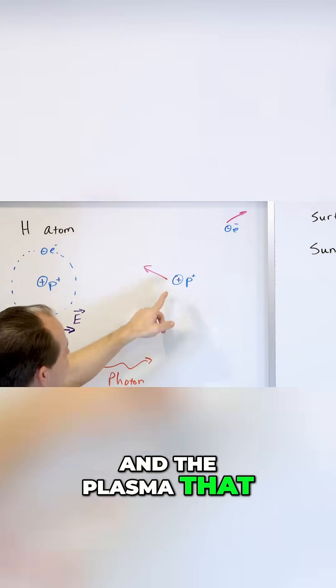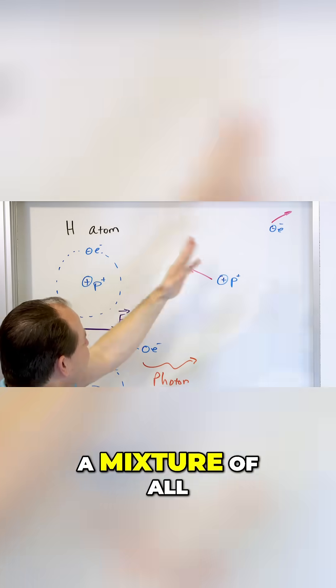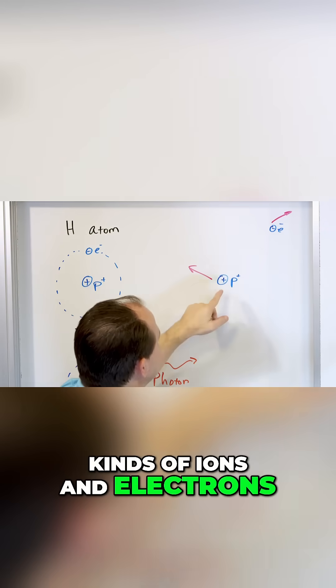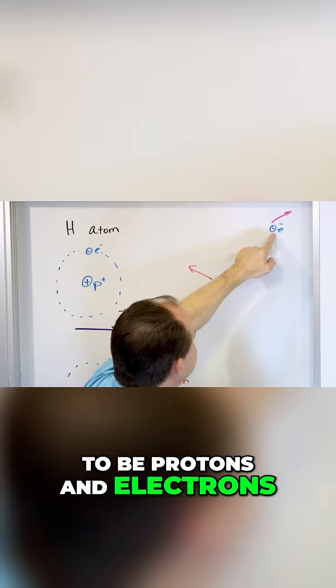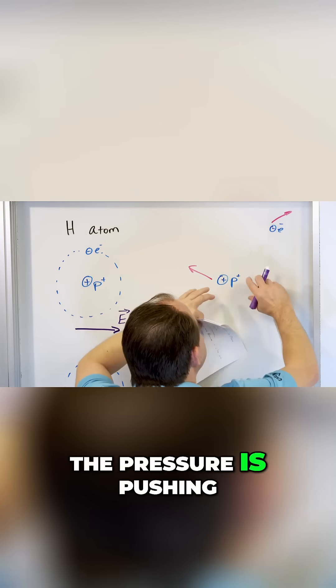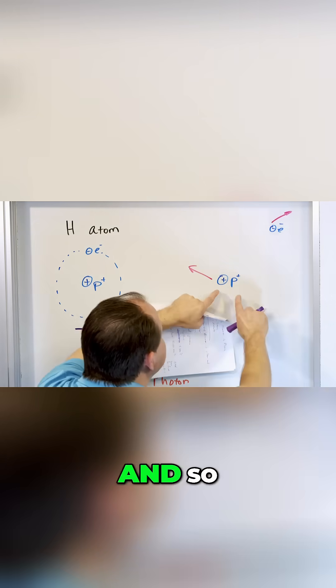And the plasma that is in the core of the Sun is a mixture of all kinds of ions and electrons, but just consider it to be protons and electrons. The pressure is pushing on this stuff.